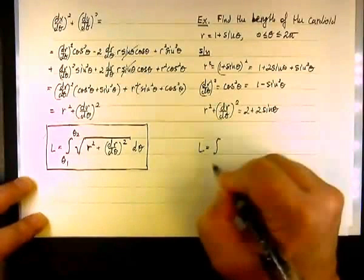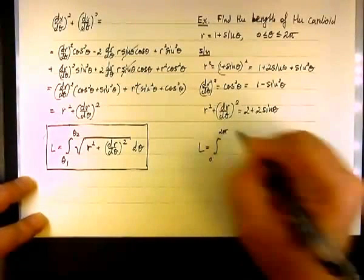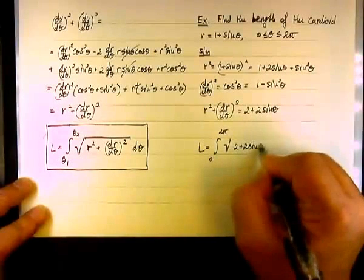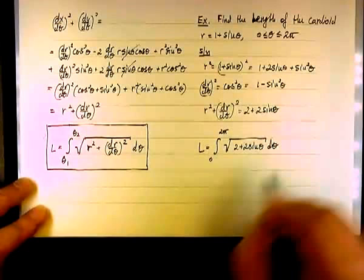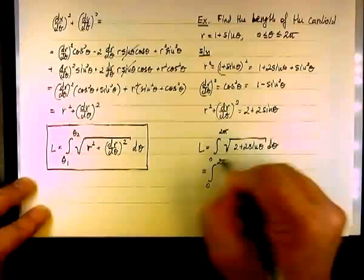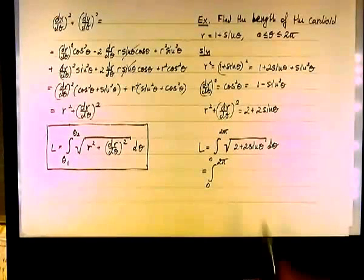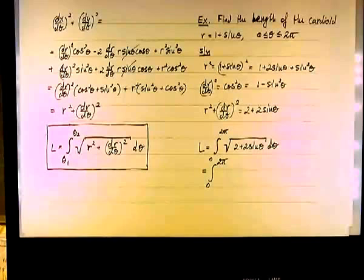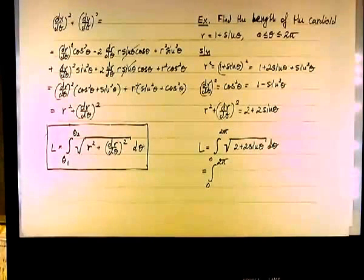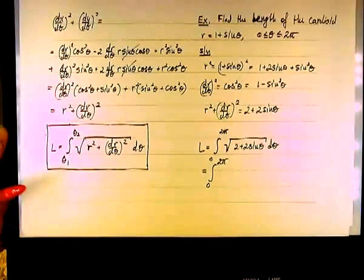The arc length will be the integral from 0 to 2 pi of the square root of 2 plus 2 sine theta d theta. This is the first challenge — what do we do with this integrand? We cannot use a trig substitution or standard trigonometric technique here; it's not something we recognize at least on the face of it.